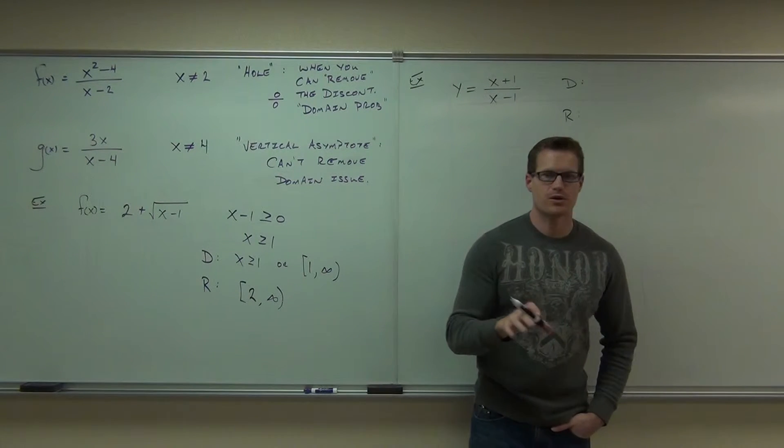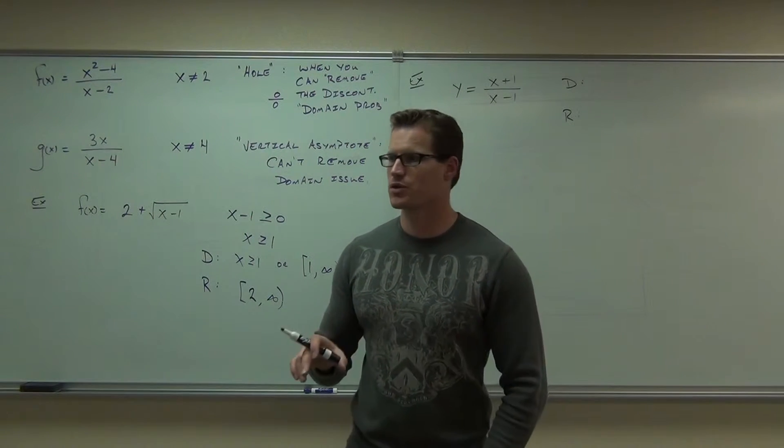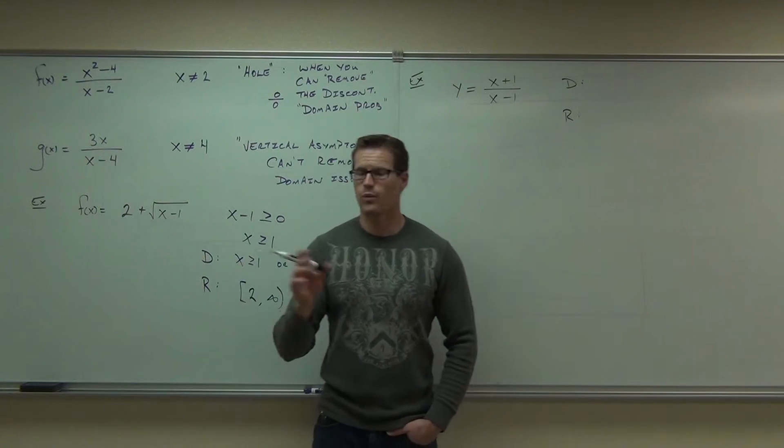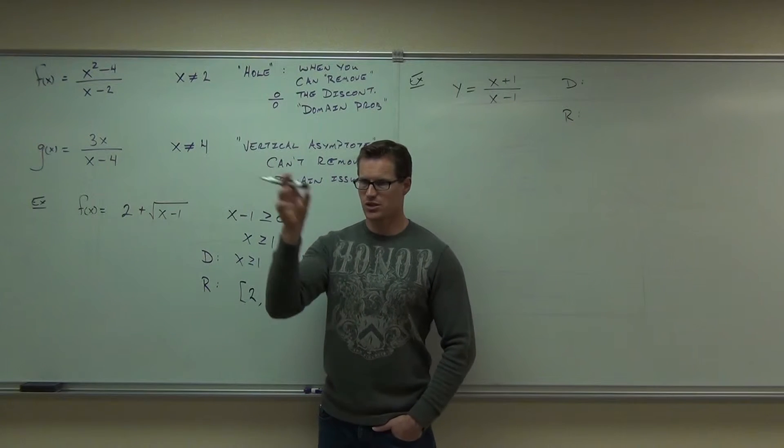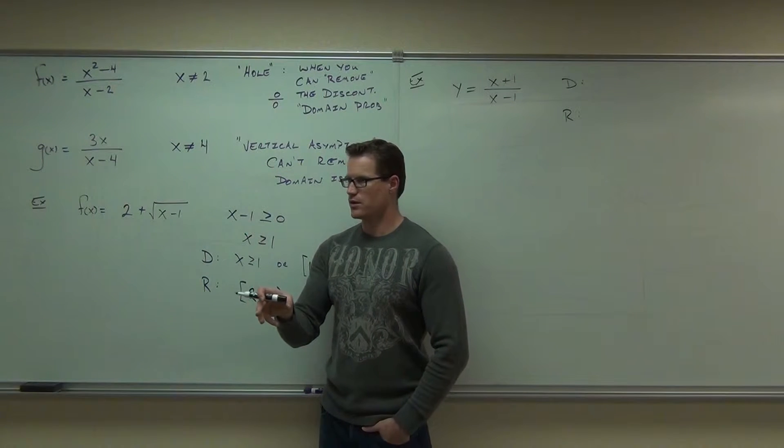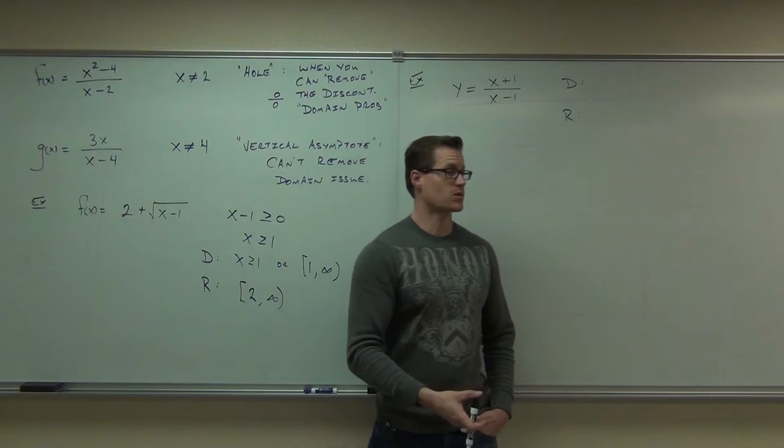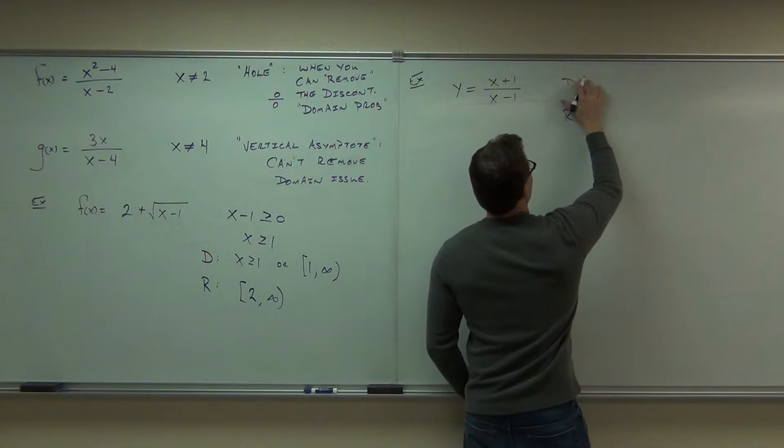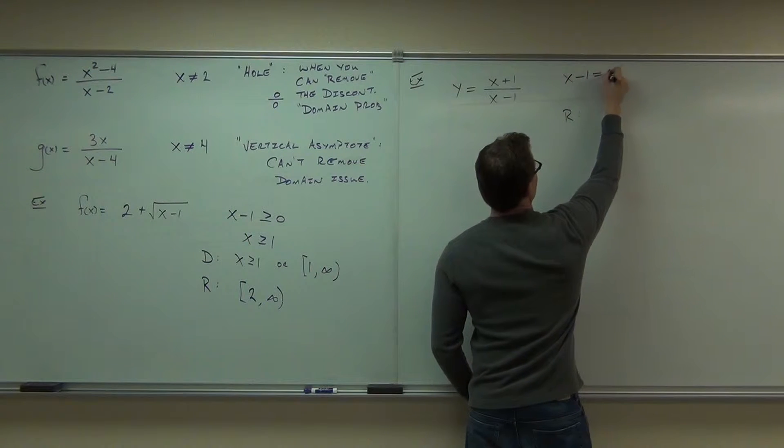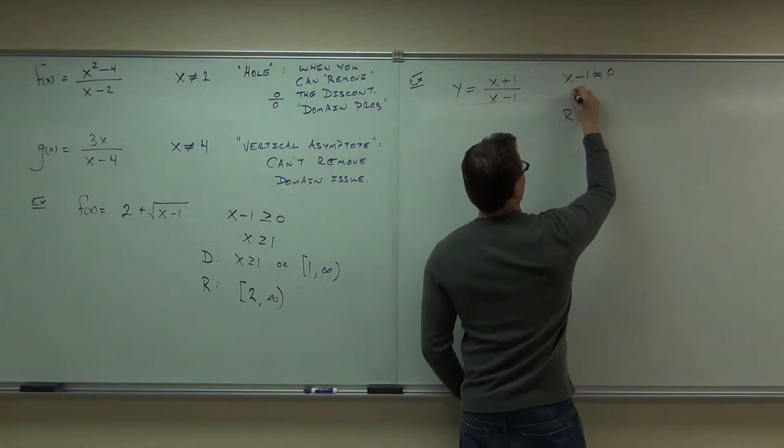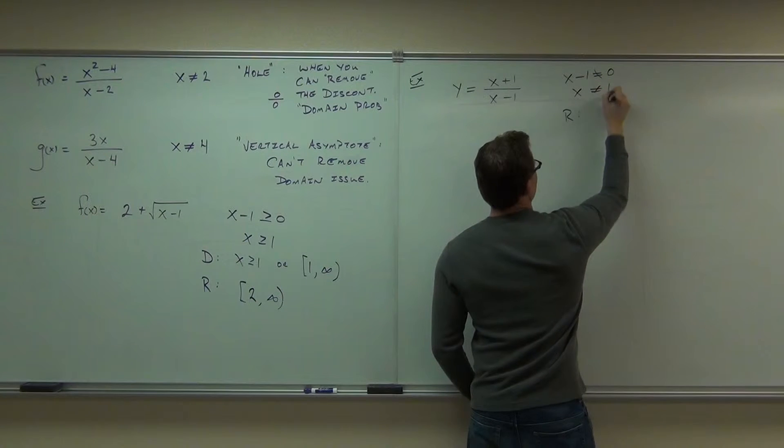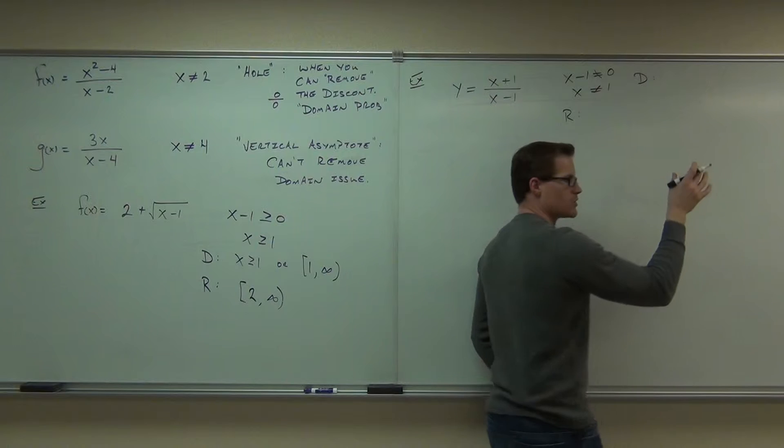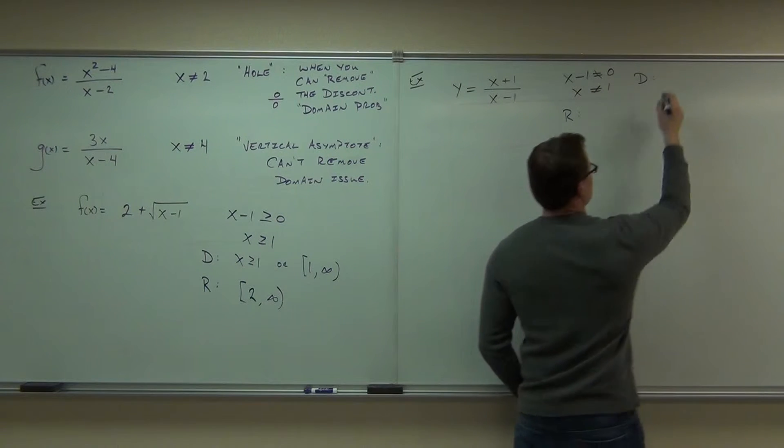We want domain and we want range. First things first, let's talk about your domain. Are there going to be any issues with our domain here? Anything that we can't plug in? One. What about negative one? Is that okay? We'll get zero over negative two. Is that all right to have? Sure. Zero over a number, that's fine. That's zero. But something over zero, that's not okay. So, for our domain, we go, okay, I know that x minus one can't equal zero, so x cannot equal one. Well, that's pretty clear, so the domain is all real numbers except x can equal one.